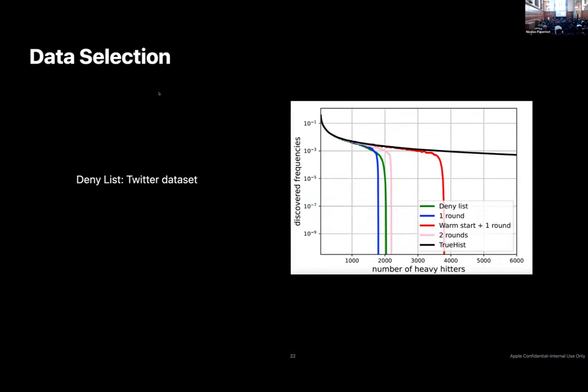We also looked at the effect of a denylist — data points you tell users at the beginning that you already know are heavy hitters, so please don't send them. You can get these from an auxiliary dataset; we used the Twitter dataset. Including a denylist really does help a lot. Even if you don't have an auxiliary dataset, if you do this algorithm in two rounds — running the entire algorithm to get a warm start and then running it again — this also results in much better results, even when the privacy budget is shared across the two rounds.